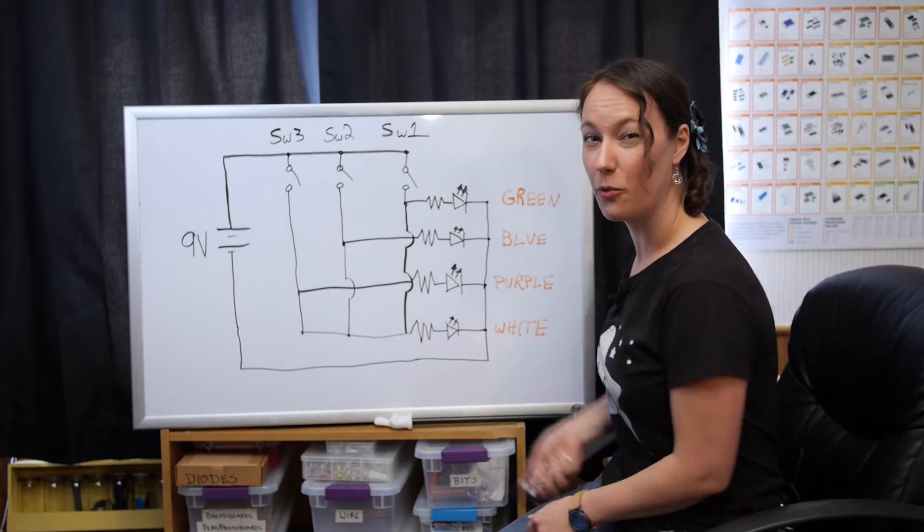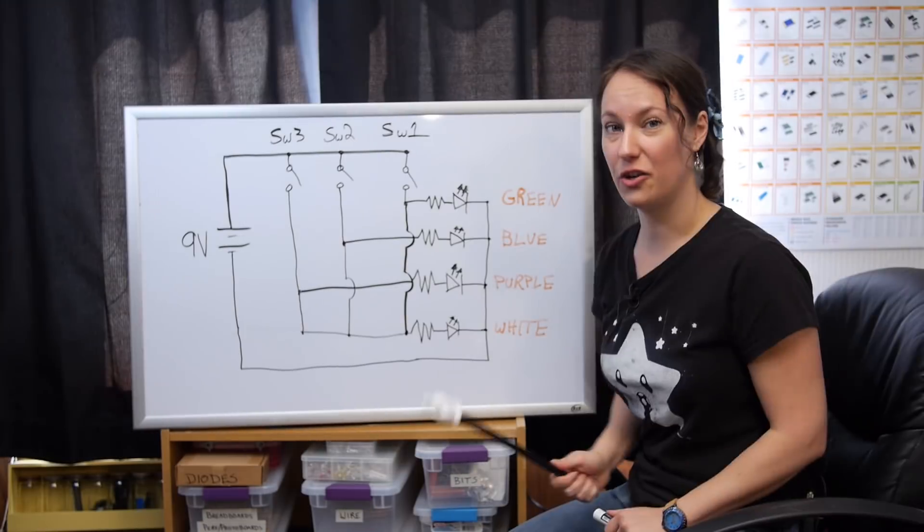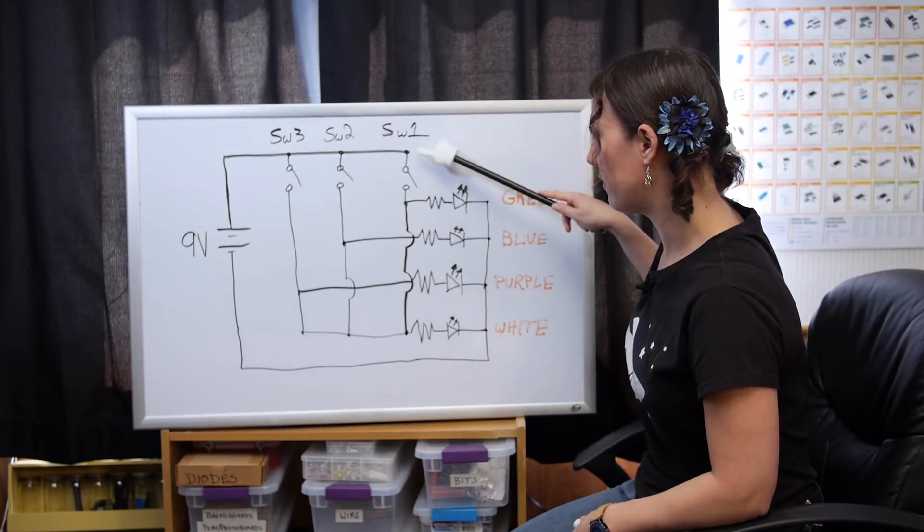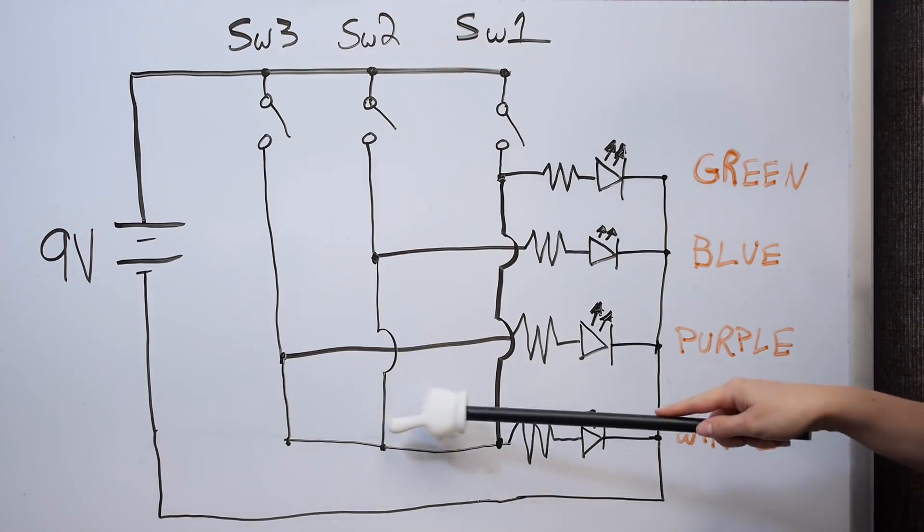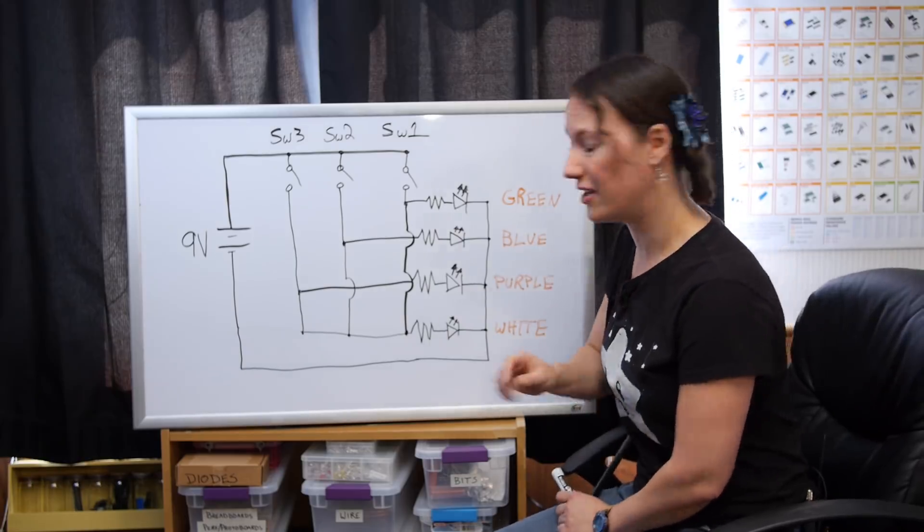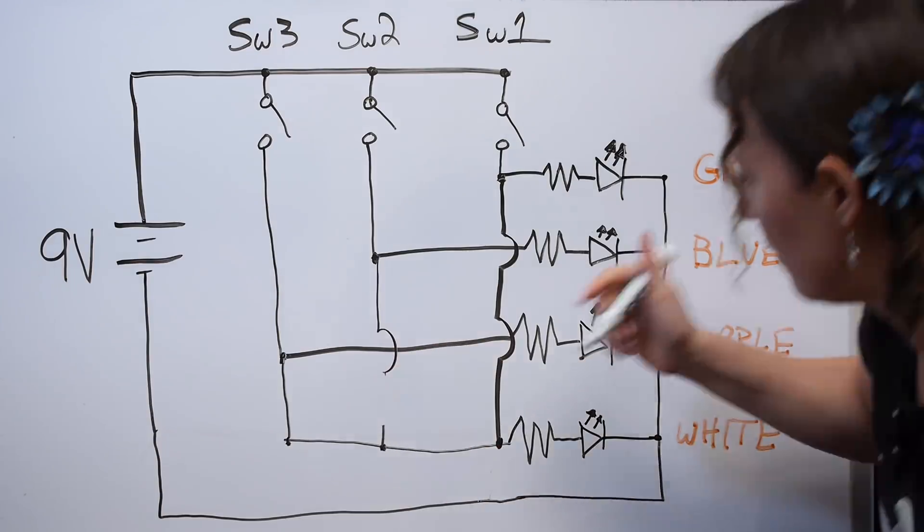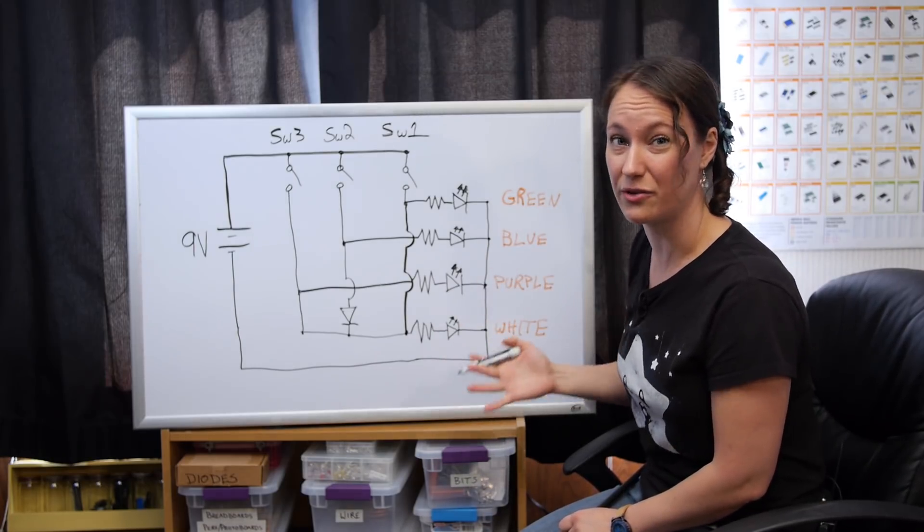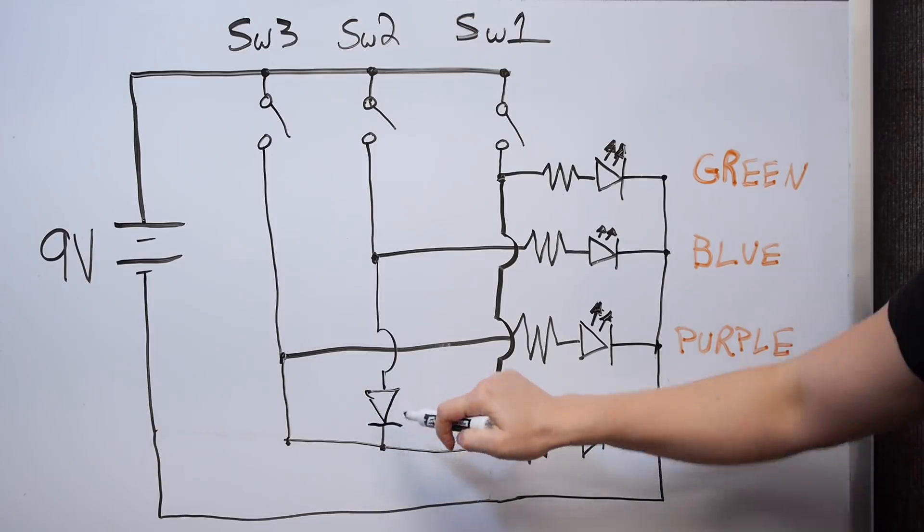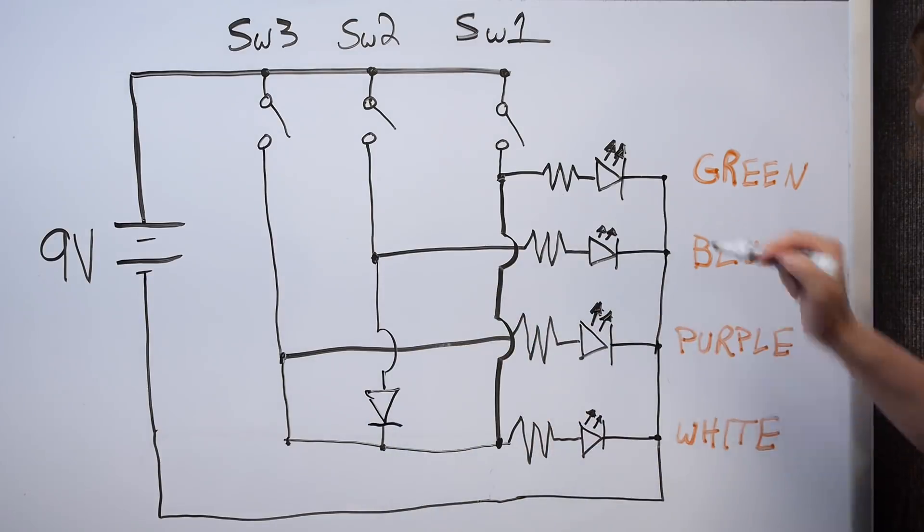So we can fix it with diodes. Okay. So if we turn on our first switch, it goes there and it goes there. But we don't want it to come back up here to go to blue. So let's add a diode to prevent it from going the wrong direction. And remember, diodes only allow current to flow in one direction.